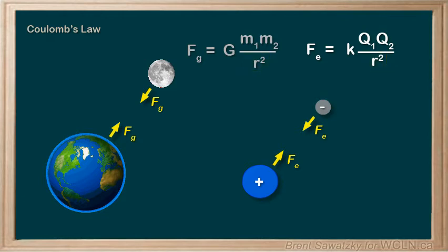And then we have the constant out front. For gravitational forces, the constant we call G. For electrostatic forces, we call the constant k.